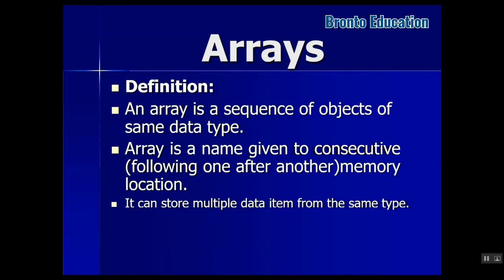An array is a sequence of objects of the same data type. It will store same data type values — for example, 20 integers, 100 characters, or 1000 floats. We also have another data structure which can save all data types, such as integers, characters, and floats inside one structure — we are going to talk about that in the next lecture.